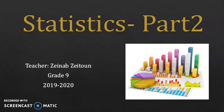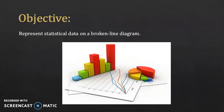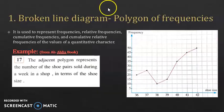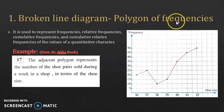The objective of this part is to represent statistical data on a broken line diagram, like the one you see here. The broken line diagram, often called the polygon of frequencies, is usually used to represent frequencies, relative frequencies, cumulative frequencies, and cumulative relative frequencies of values of a quantitative character.